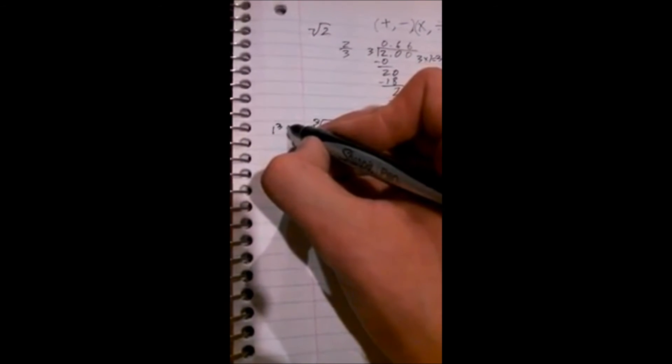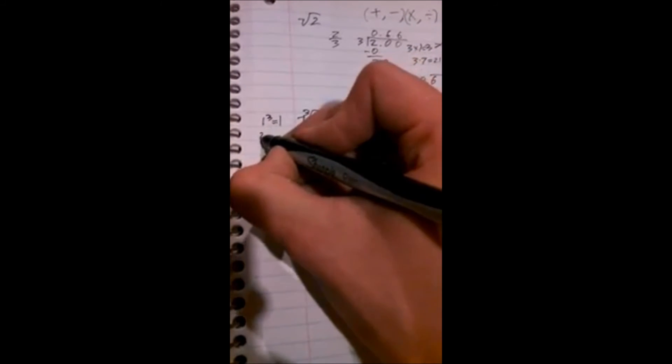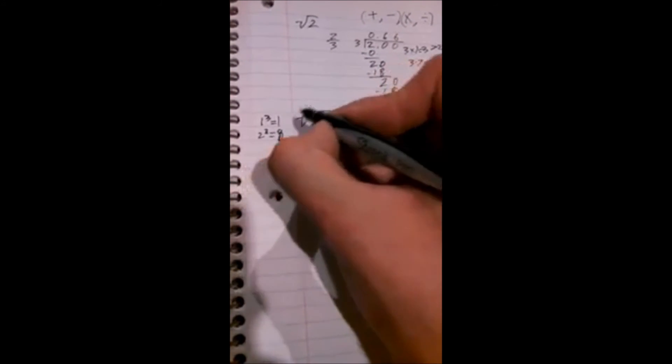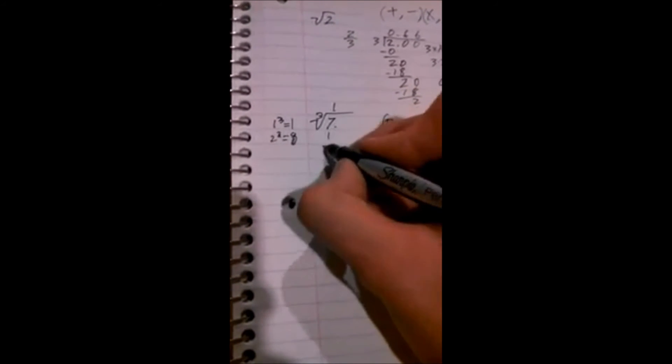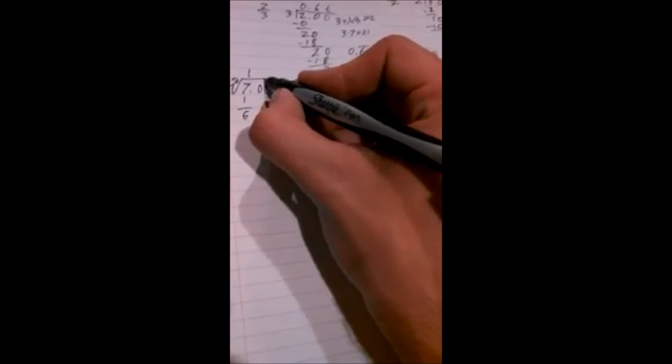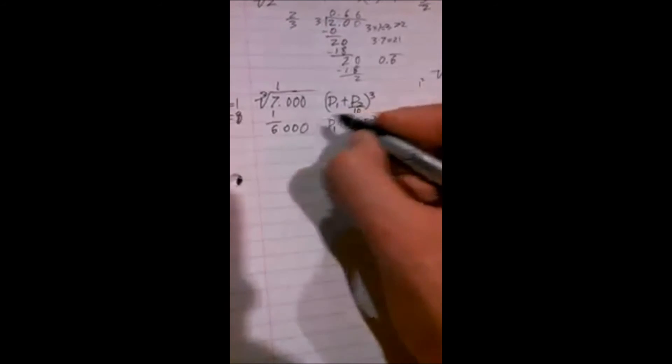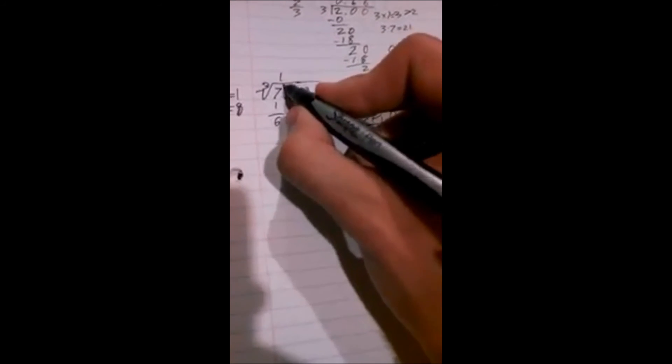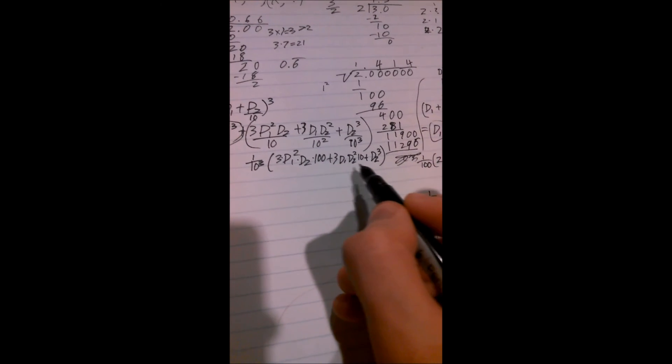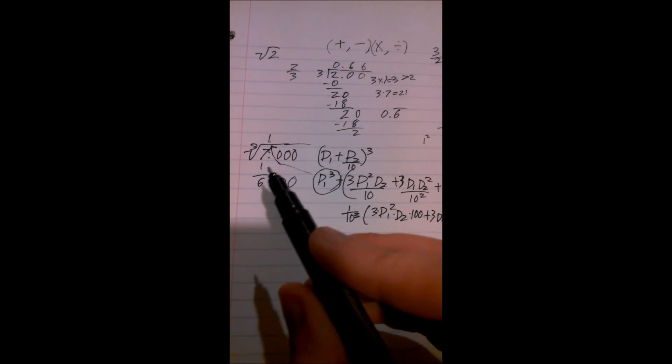So in this instance, 1 cubed is 1, 2 cubed is 8, so we would plug in a 1 which would give us a remainder of 6 and we would have to pull down three digits this time because it's to the thousandths place. Plug that many down. This would be your first, how you got your first term. So this would be your repeating pattern. And you'll notice the equation for this is longer because cubes are harder to do than squares.